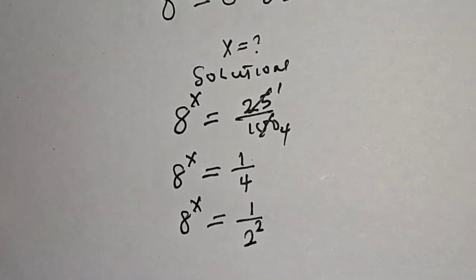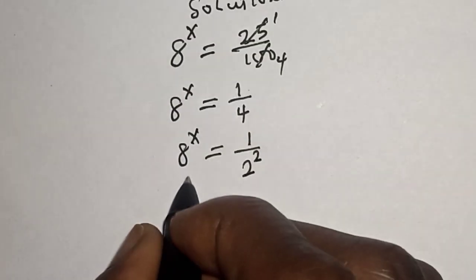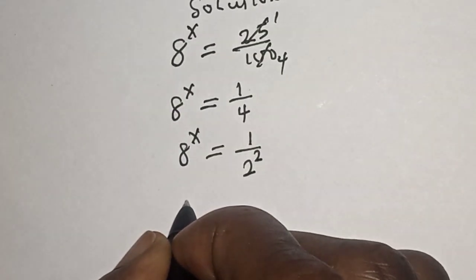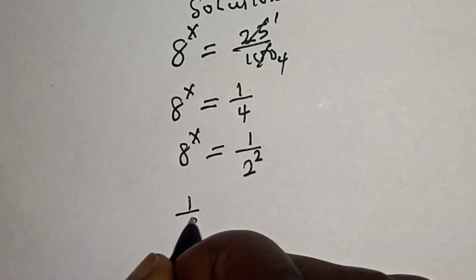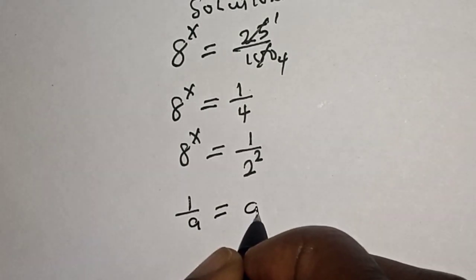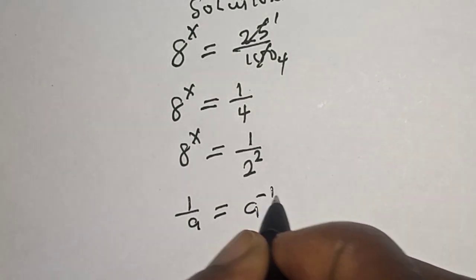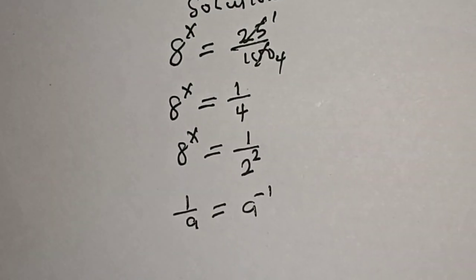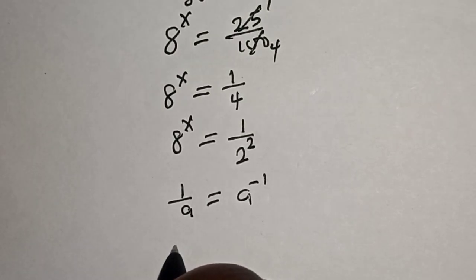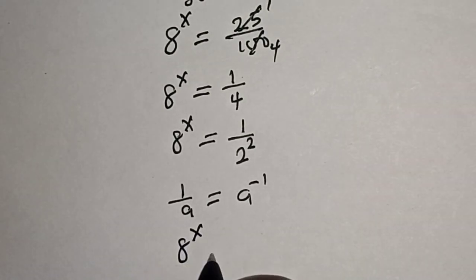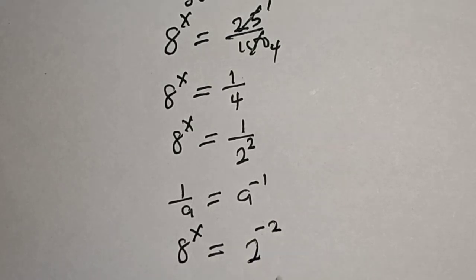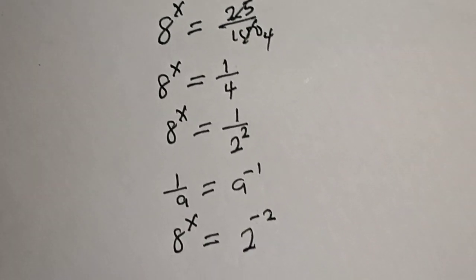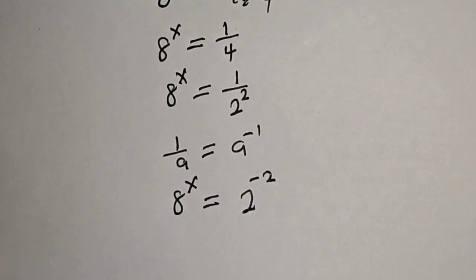Take note that if you have 1 over a, this is equal to a raised to power minus 1. So 8 raised to power s is equal to 2 raised to power minus 2.